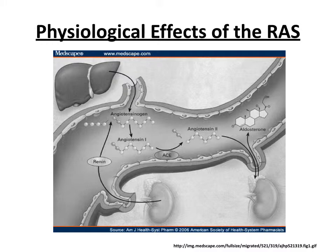Now I'm going to go into the physiological effects of the renin-angiotensin system and then the drugs that affect it. This slide shows the angiotensin production pathway again: angiotensinogen is made in the liver; renin cleaves it to angiotensin I; angiotensin-converting enzyme, stuck on endothelial cells of blood vessels, converts angiotensin I to angiotensin II. The most important product is angiotensin II.